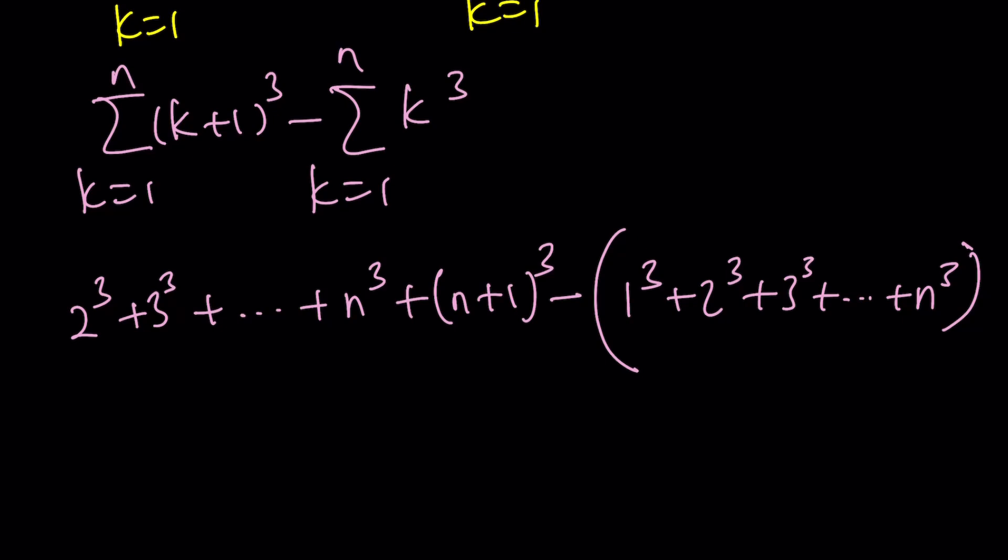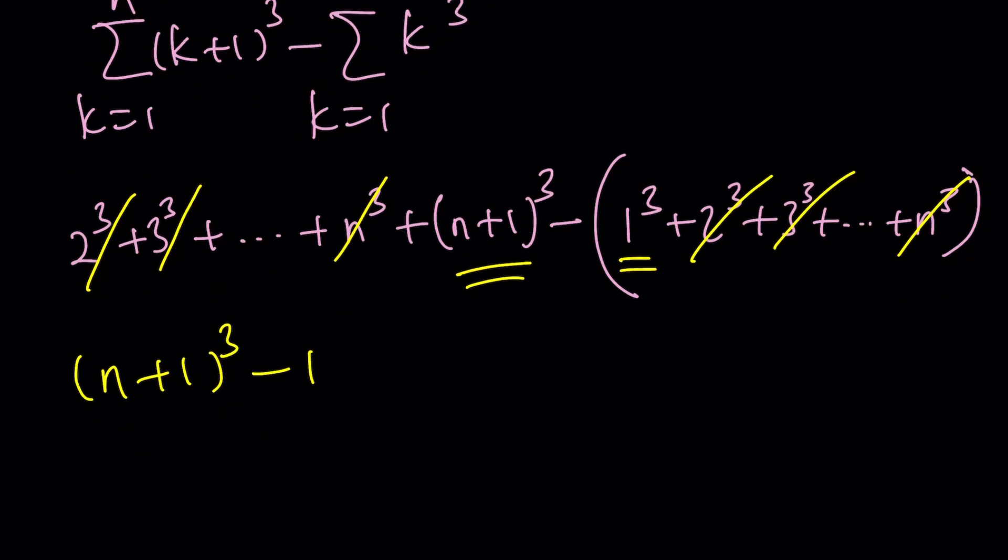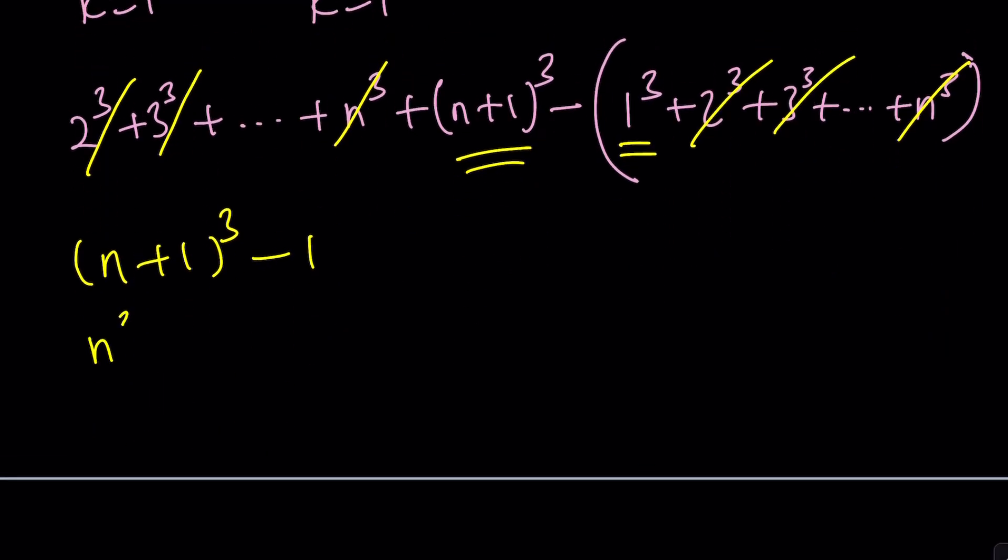Notice that this is kind of like a telescoping sum. You can cancel all these terms out and you're going to end up with something super-duper simple. This 1 minus 1. Wait a minute, is that helpful at all? Yeah, it is going to be helpful. You'll see in a little bit. But what is n plus 1 cubed minus 1? First of all, n cubed plus 3n squared plus 3n plus 1 minus 1. This is exactly what it is.